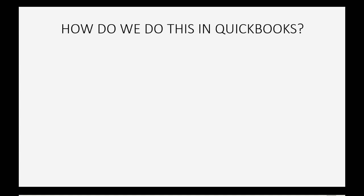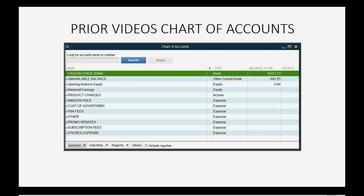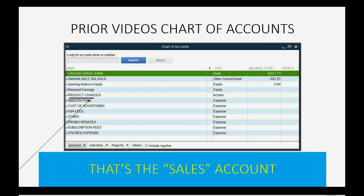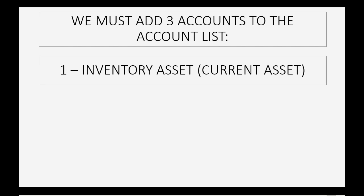To do this in QuickBooks, recall from the prior video that the account called product charges represents sales — the money that came in from customers. We must now add three additional accounts to the chart of accounts so QuickBooks can find your cost of goods sold. First, we add an account called inventory asset, which is a current asset.